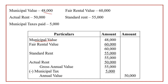As per the question, the municipal value is 48,000, so I am writing it in the inner column. Then, with the municipal value, we have to compare fair rental value. In the question, the fair rental value is 60,000, so I am writing it in the inner column. After this step, you have to compare these two values and take the highest value. Compare municipal value and fair rental value and take the highest value. In this case, 48,000 and 60,000 — 60,000 is the highest value, so I have brought down that answer.